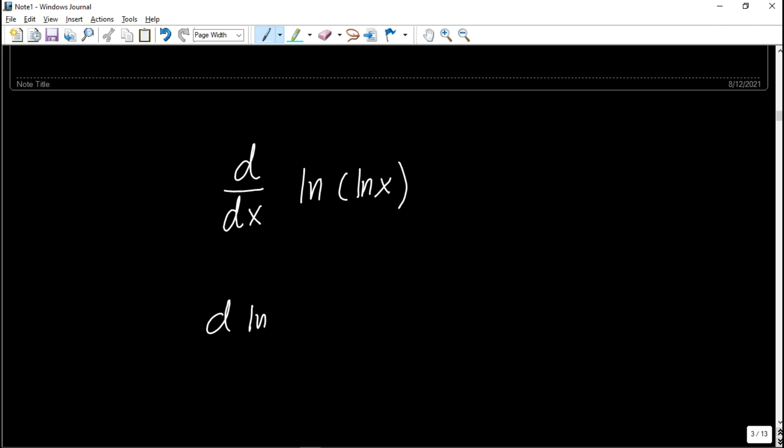the derivative of ln u, where u is a function, is equal to the derivative of u all over u. Basically, differentiate the inside function u and divide that by the original function.